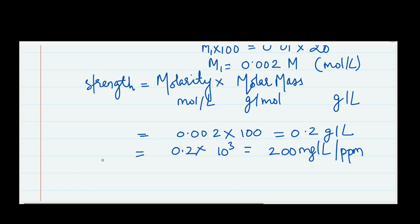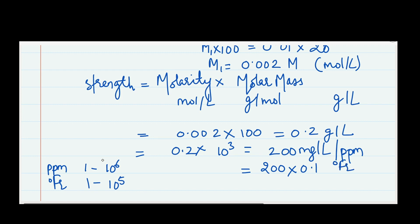They say to report the result in degree French. One ppm is one part of hardness dissolved in 10⁶ parts of water, while degree French is one part of hardness dissolved in 10⁵ parts of water. To convert ppm to degree French, multiply by 0.1 — since multiplying by 0.1 converts 10⁶ to 10⁵. So 200 ppm × 0.1 gives 20 degree French as the total hardness.